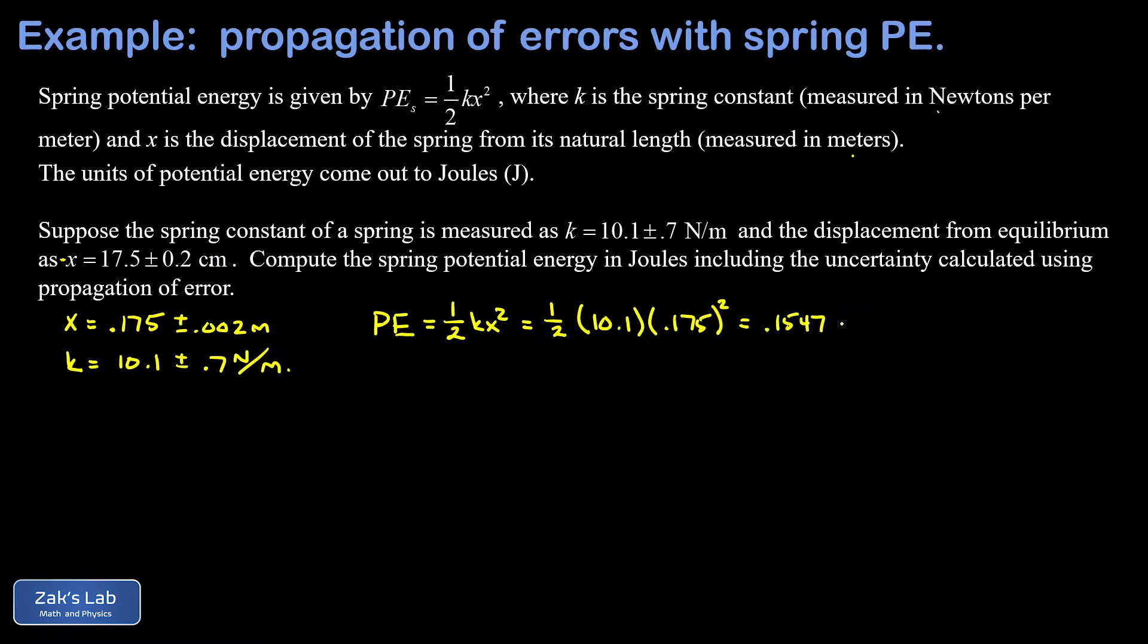The real meat of the calculation is finding the uncertainty. We have to use the propagation of errors formula that includes a product of two measured variables where one or more could be raised to an exponent, because we have an exponent of two on that displacement.